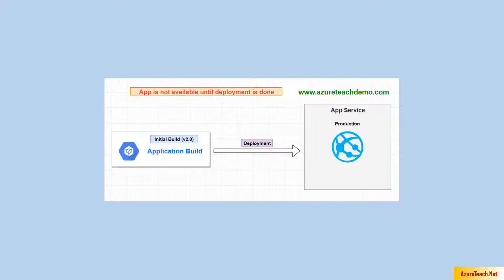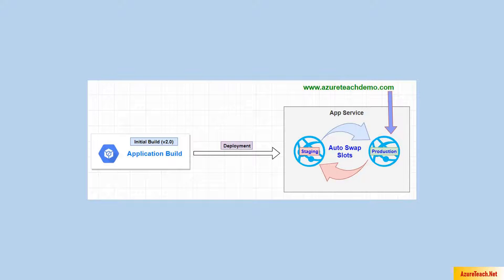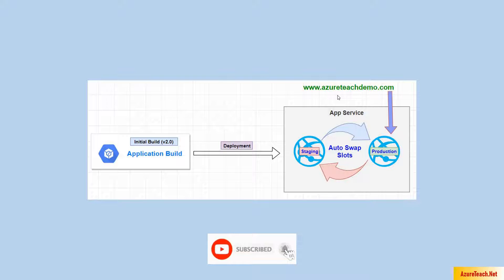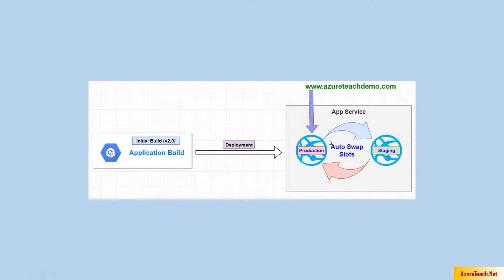Here is where deployment slots come to the rescue. As shown in the diagram, we can create multiple deployment slots inside App Service. This diagram has two slots: staging and production. When deploying the application, we deploy to staging, do testing, and if we are satisfied with the result, we swap the slots — staging becomes production and production becomes staging. If there is any issue, we can simply swap the slots again so that the previous version of the application is available to users.